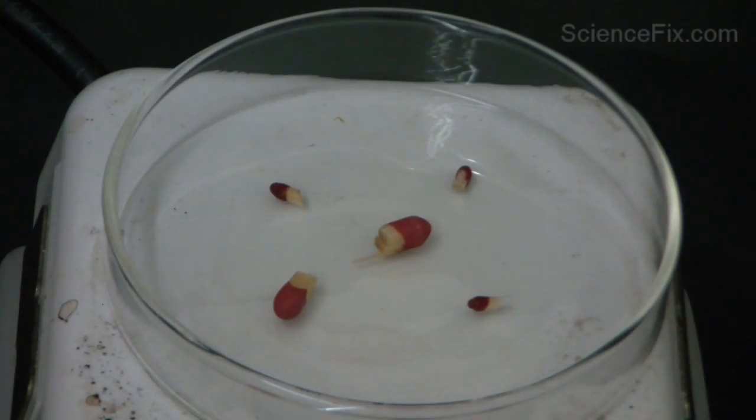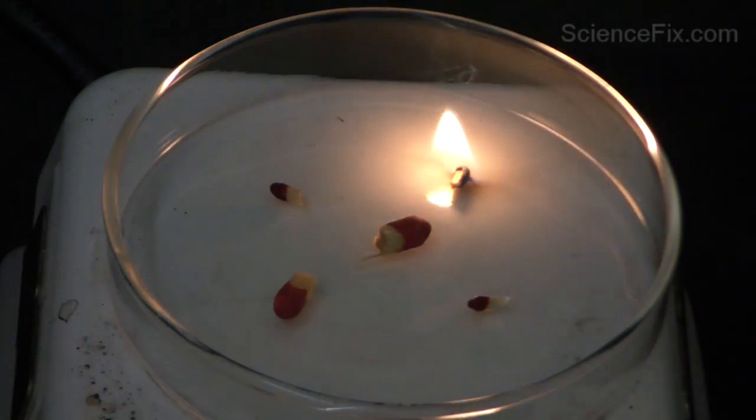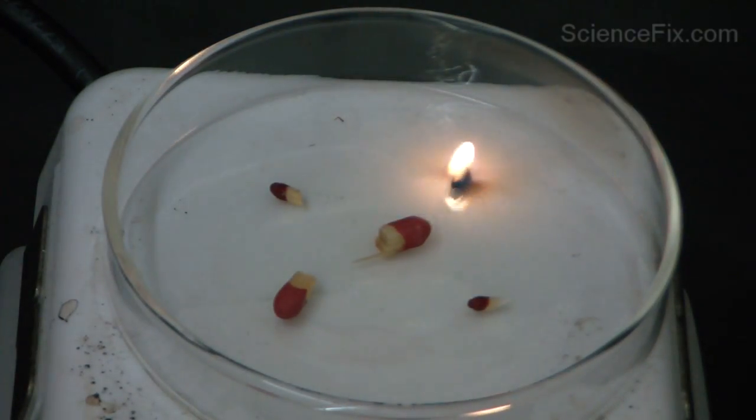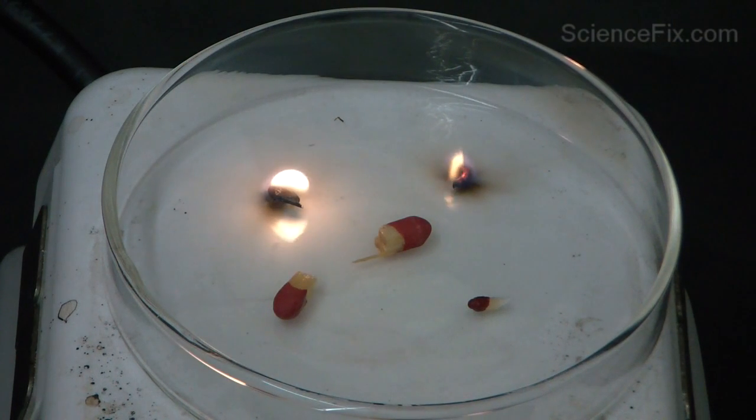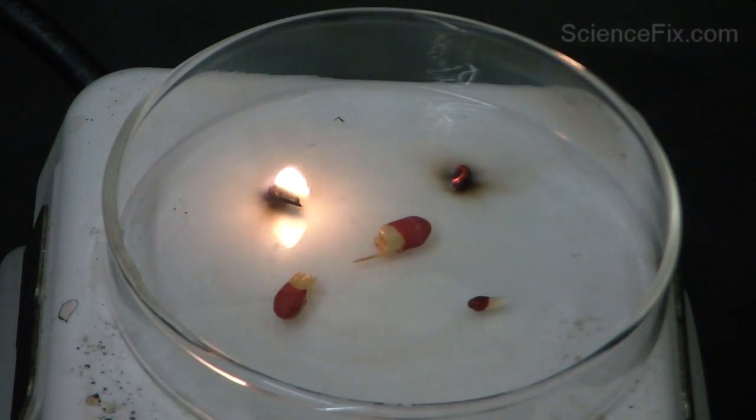Here's a petri dish with some match heads that have been cut off. Again, there's enough heat energy provided by the hot plate—the activation energy—needed to make the red phosphorus react.